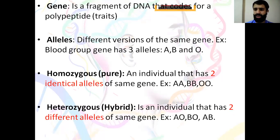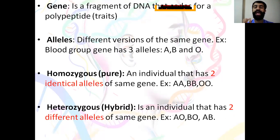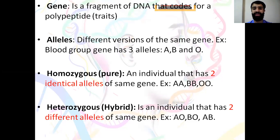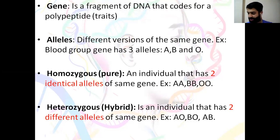Heterozygous is the opposite — it's also called the hybrid. Heterozygous means an individual that has two different alleles for the same gene. For example, having allele A and allele O means your blood group will be A. So this is called heterozygous, or the hybrid.